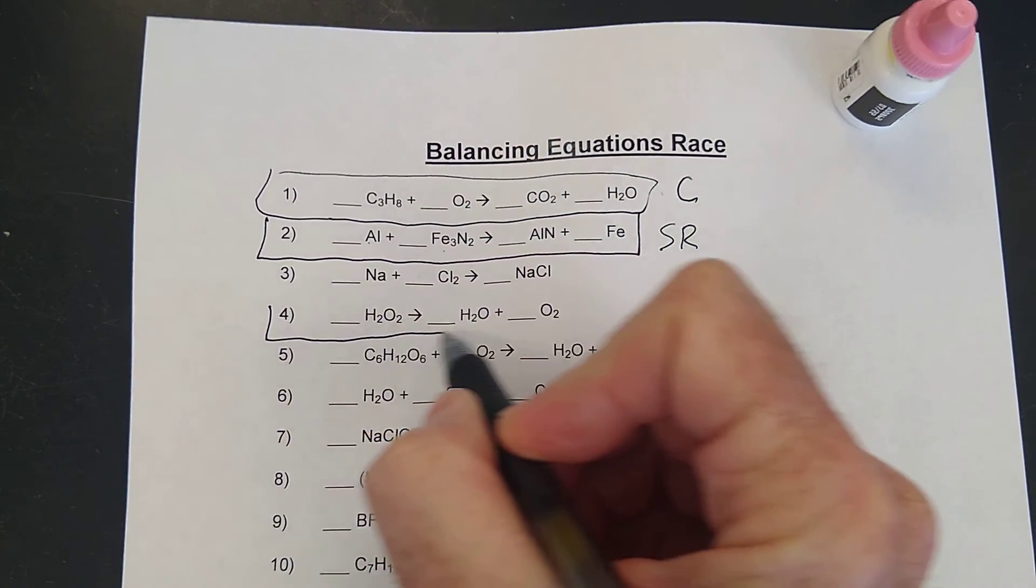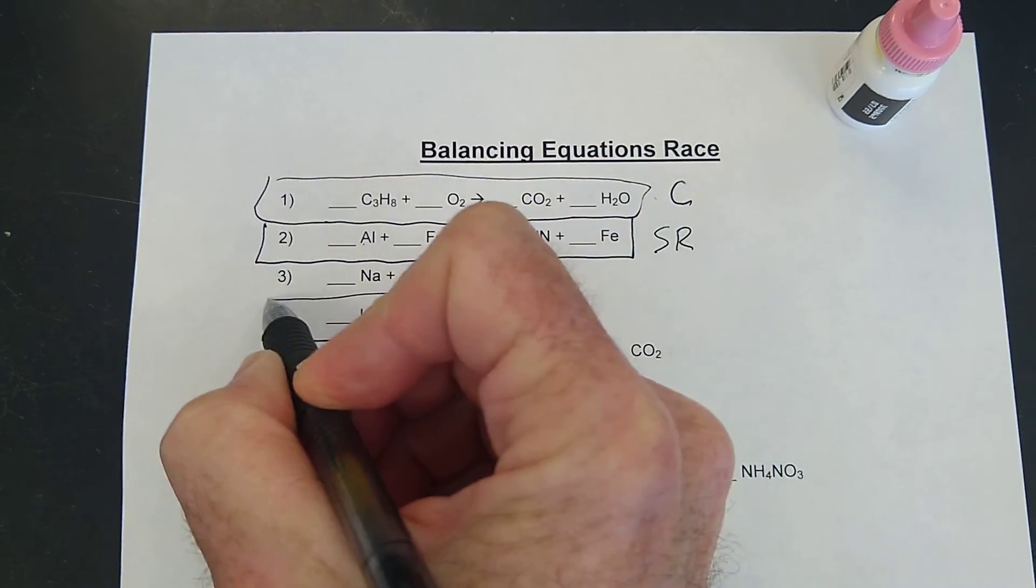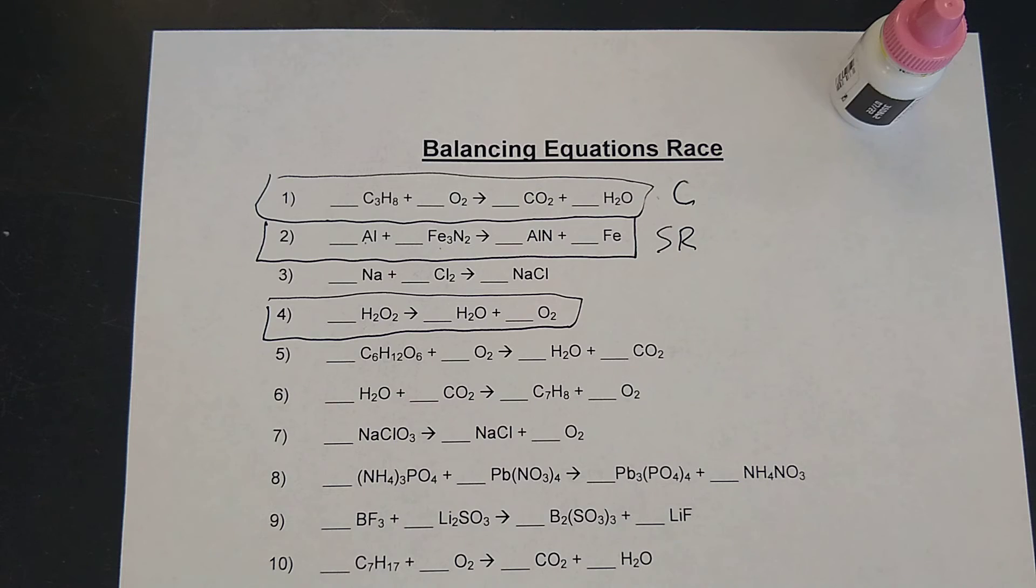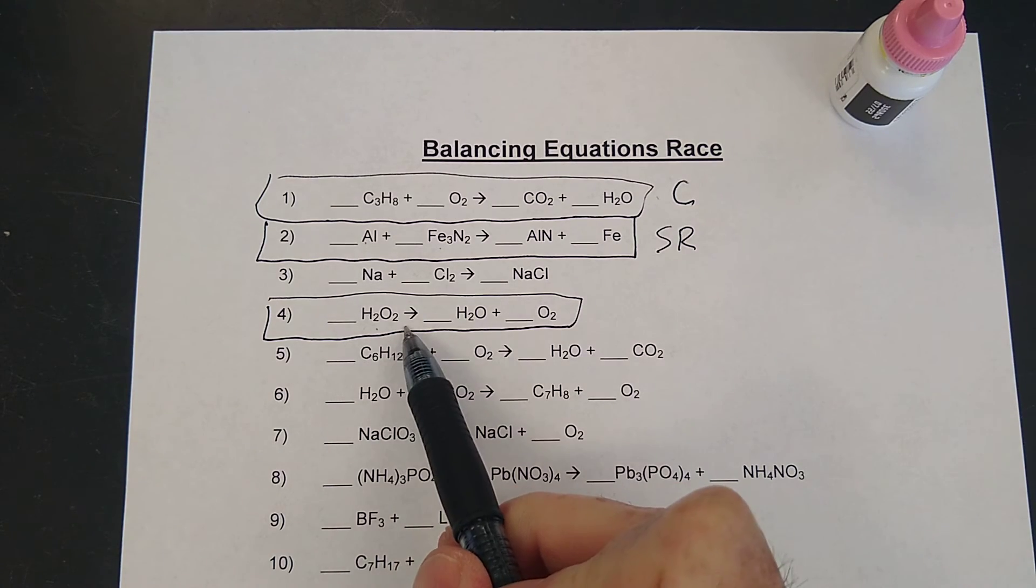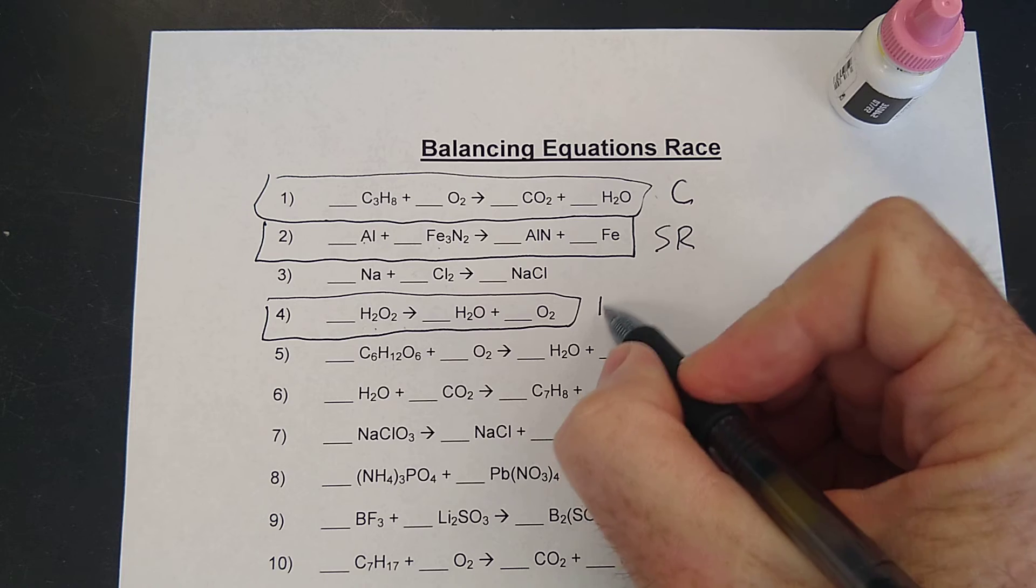How about number four? What type of reaction would number four be? You have hydrogen peroxide and it breaks down into water and oxygen. That's right. That'd be a decomp.